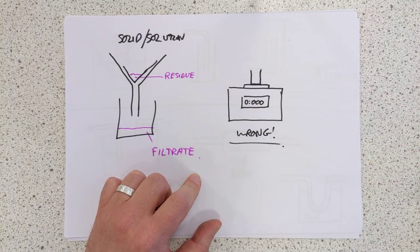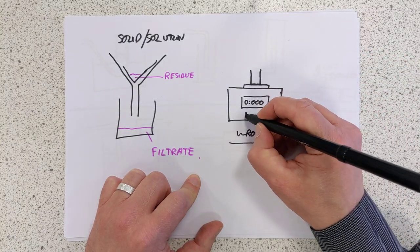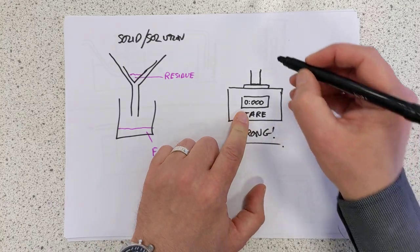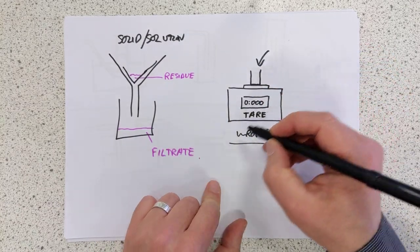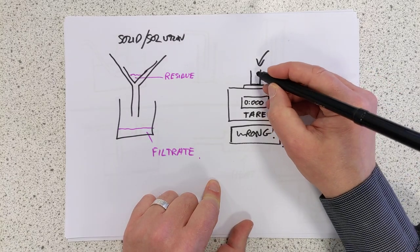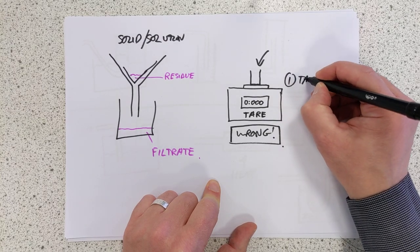Using a balance, many people will pop an empty beaker on a scale, for example, press the tare button, T-A-R-E, which is the zero button, and put it to zero, and then start adding their chemicals. This is wrong. What you should do is tare the balance first.